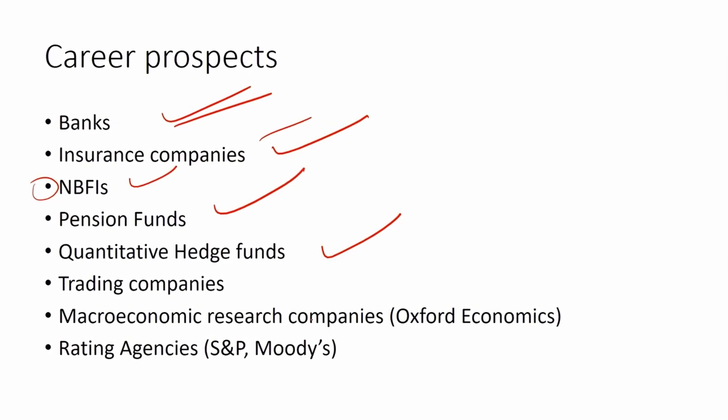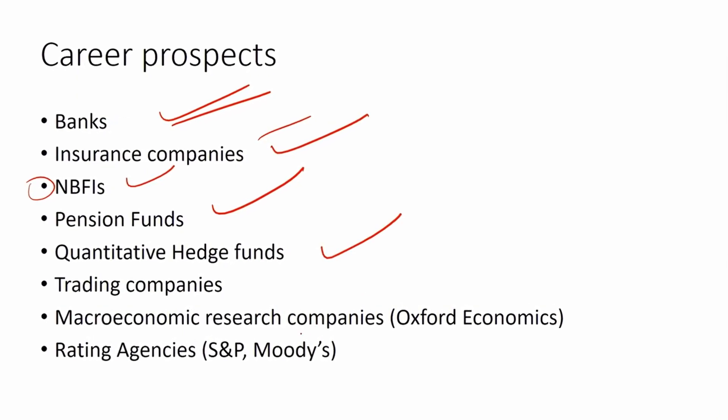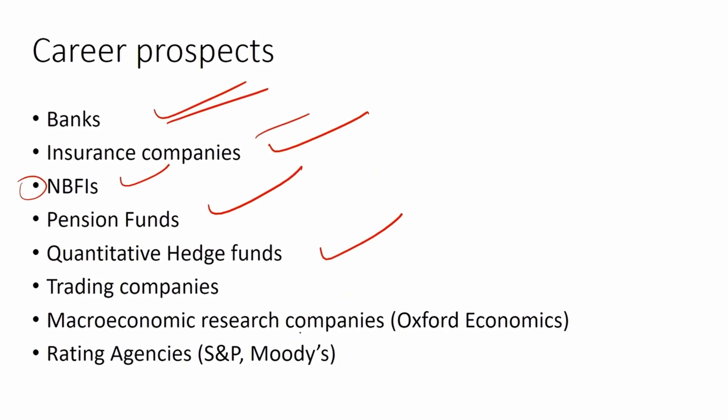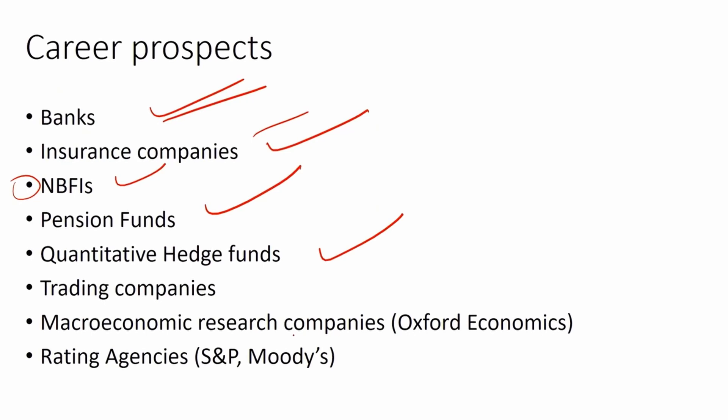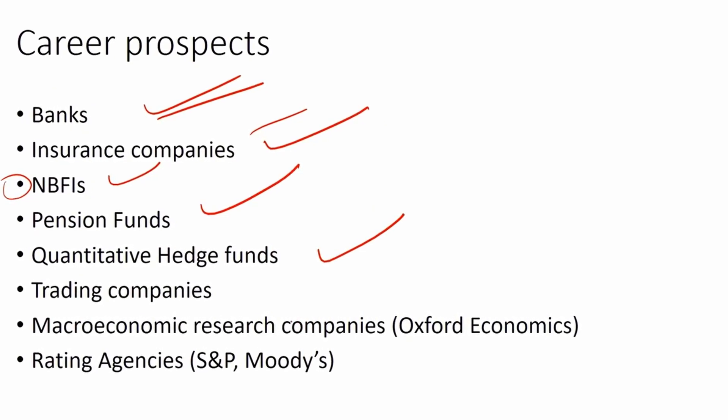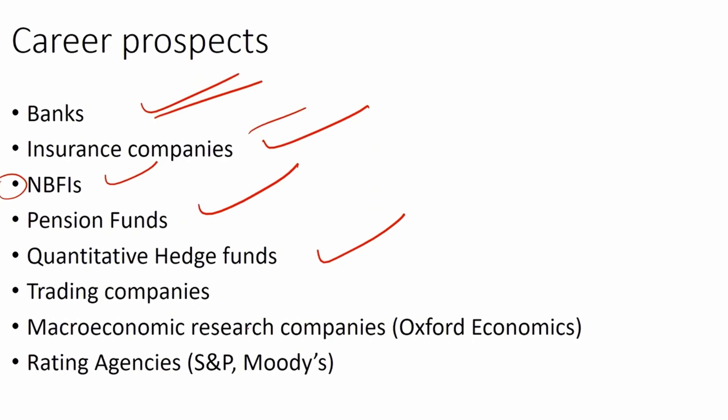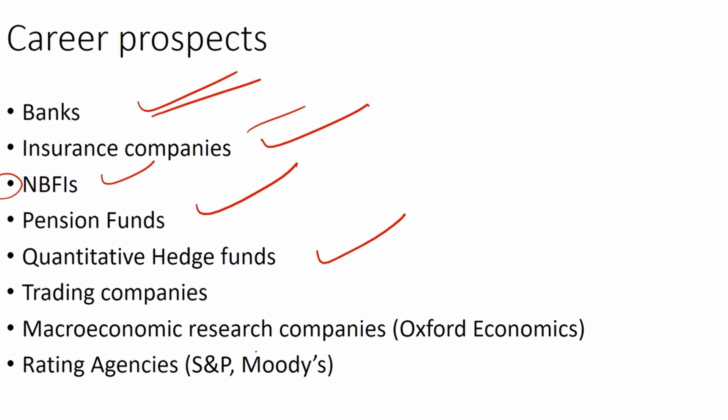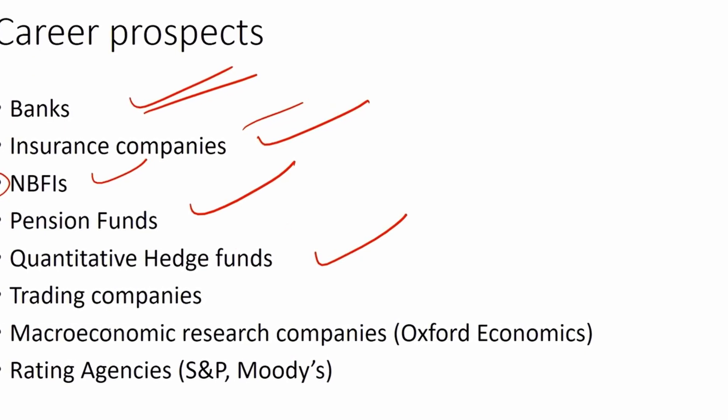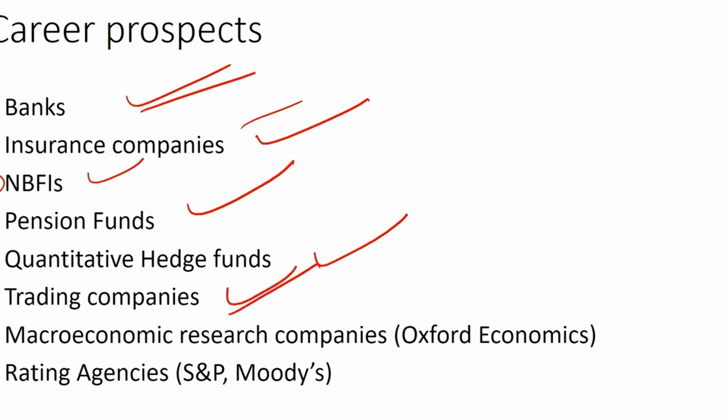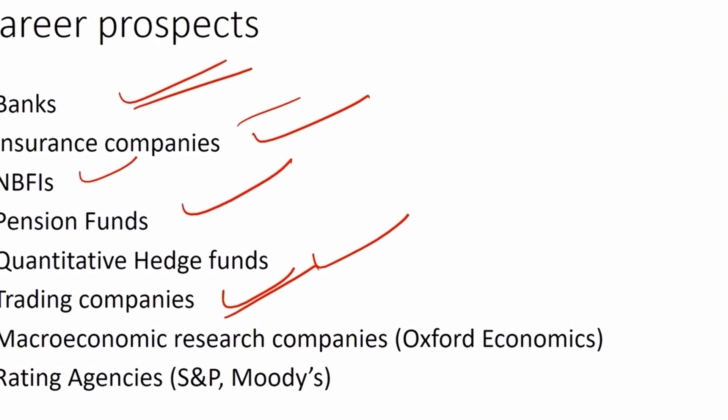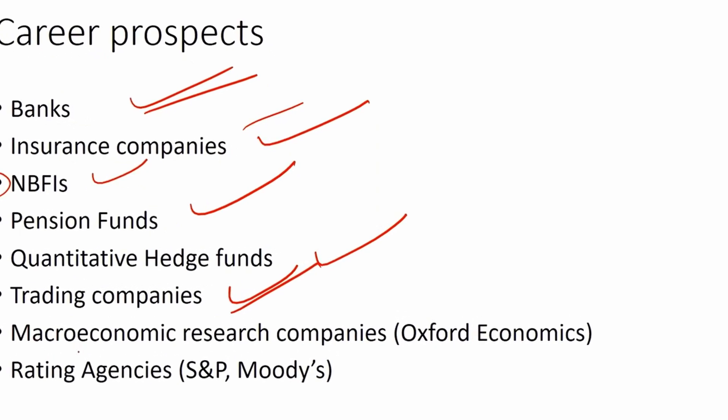Pension funds, quantitative hedge funds - it's very difficult to get into quantitative hedge funds, but if you have a PhD in math or physics and you live in the UK or some Western European countries or in the US, you can indeed get a job in quantitative hedge funds. You don't have quantitative hedge funds in many parts of the world, but if you have access to these large financial centers, you can certainly find jobs there. They use a lot of financial econometrics. Trading companies use financial econometrics for their day-to-day trading activities.